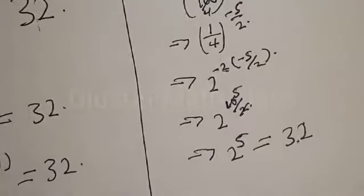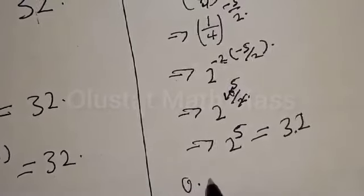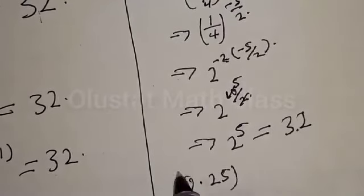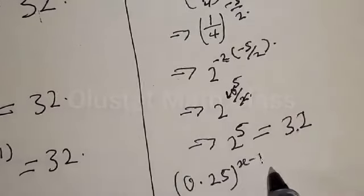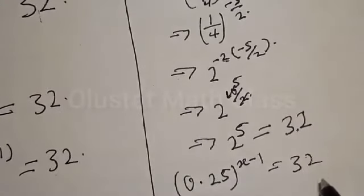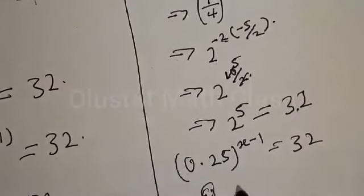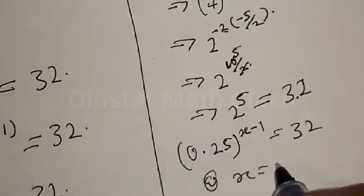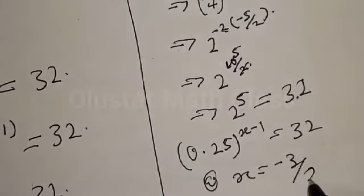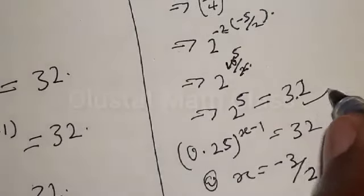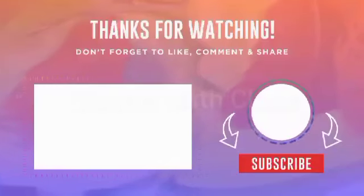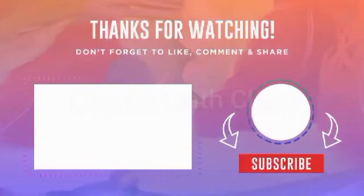The equation 0.25 raised to power s minus 1 equals 32 is satisfied at s equals minus 3 over 2. If you've enjoyed the class, please don't forget to like, share, comment and subscribe. Thank you.